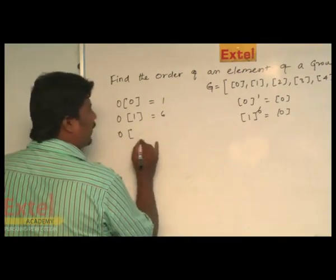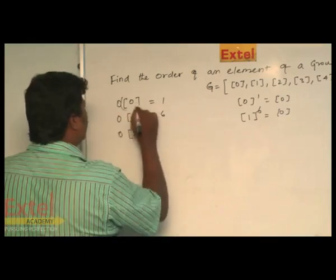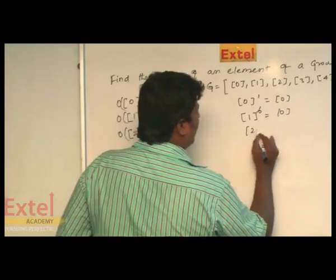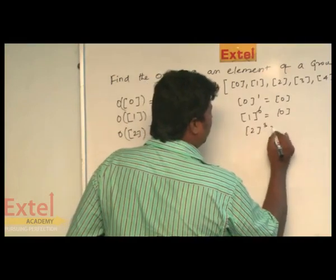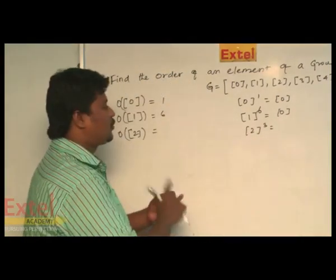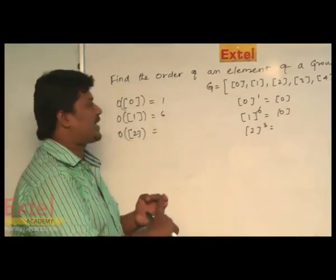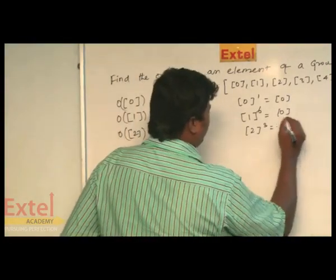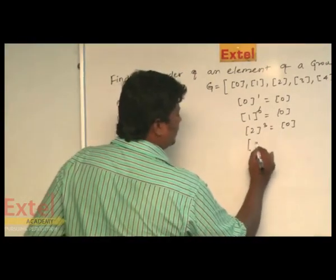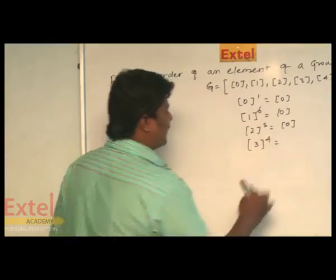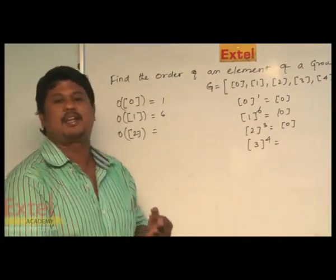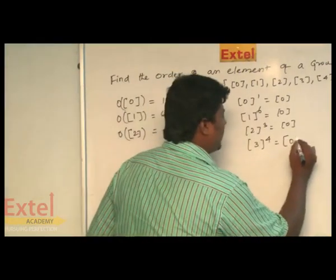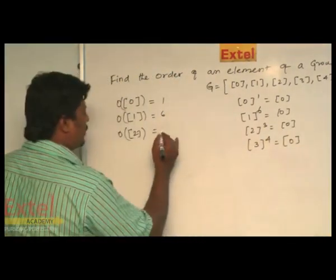Then the order of element 2: we can write 2 power 3, because 2 plus 2 plus 2 equals 6. The modulo of 6 under addition gives the identity element 0. Therefore, the order of 2 is 3.